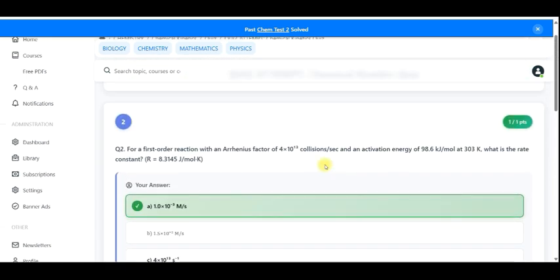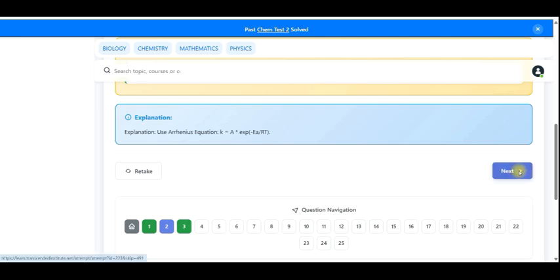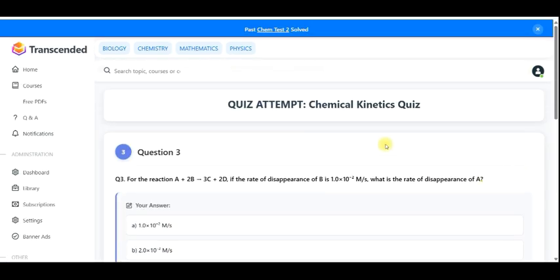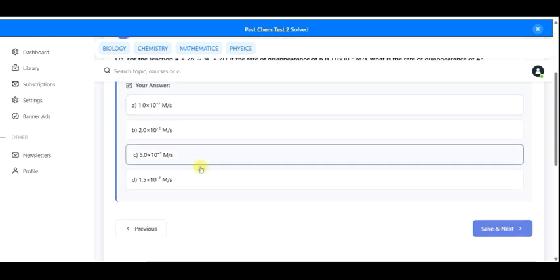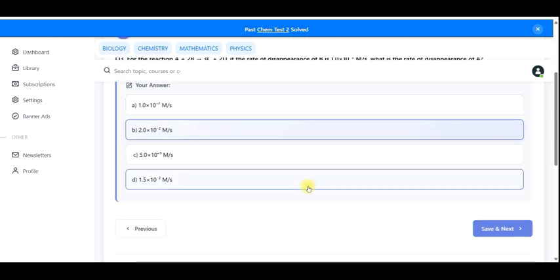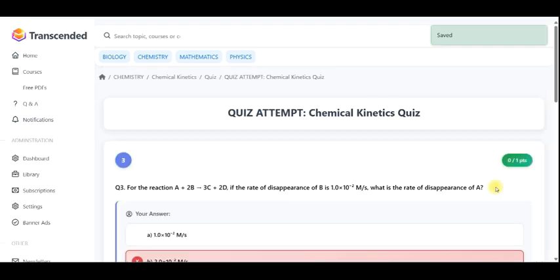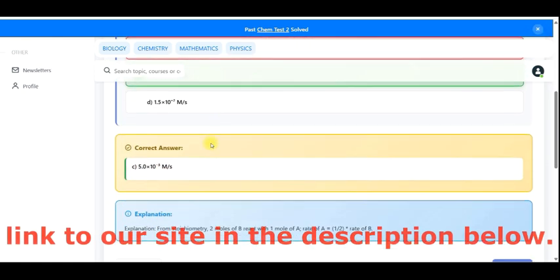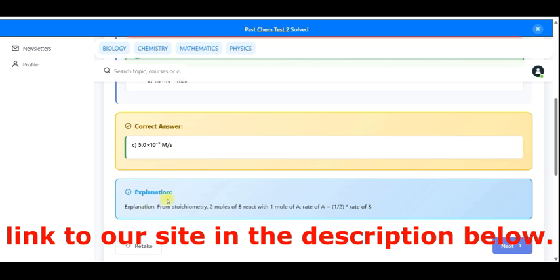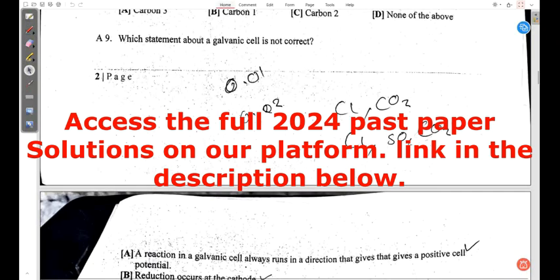So the previous attempt ended on question two. For the reaction A plus 2B, what is the disappearance of A? I'm just guessing, I haven't calculated anything. Save next. So you see that my answer is wrong, then the answer is this one. There's an explanation on how that is coming about. Let's take a bit of rest, let's continue.